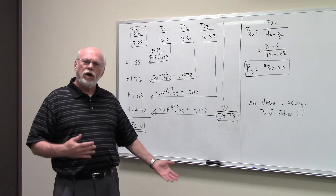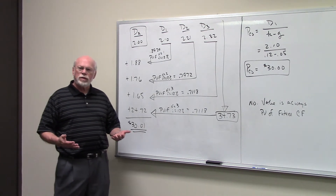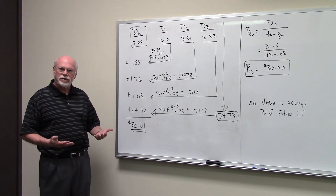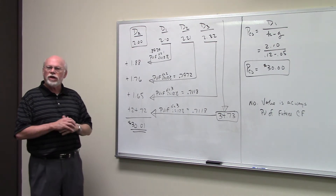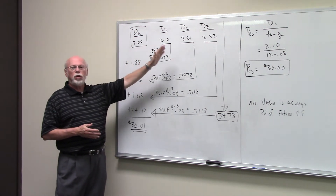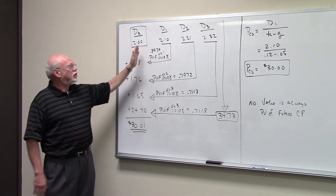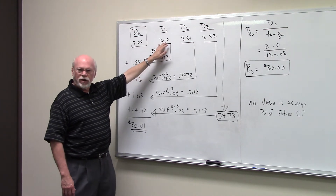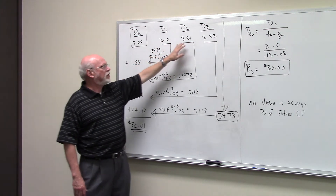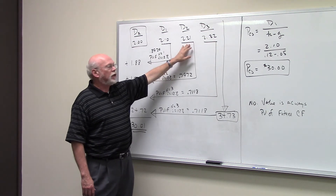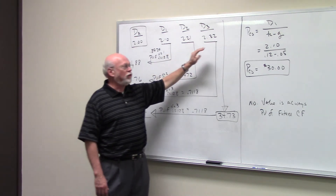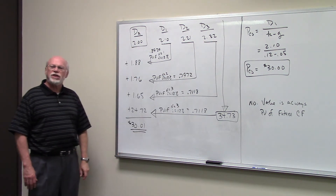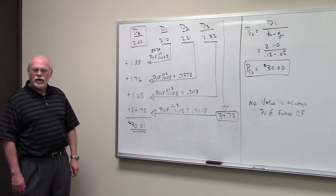As you know, if you're doing non-constant growth — which is what they're stepping you through here — the first thing you do is forecast all your dividends. In this case, D0, the current dividend, is $2. The dividend is going to grow at 5% per year, so $2 multiplied by 1.05 gives us $2.10. $2.10 times 1.05 gives us $2.21. $2.21 times 1.05, one plus the growth rate, gets us $2.32. That's the forecast of dividends during the holding period of three years.